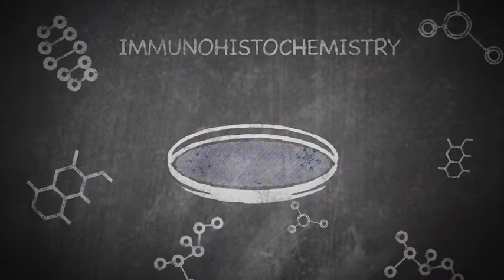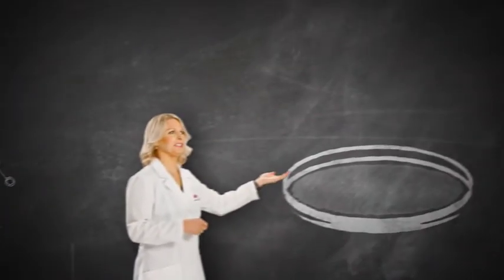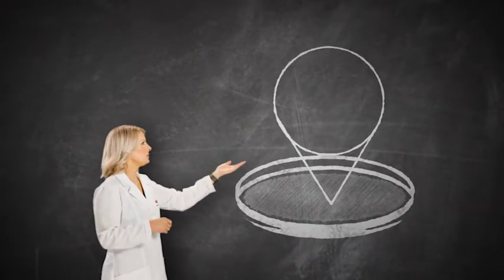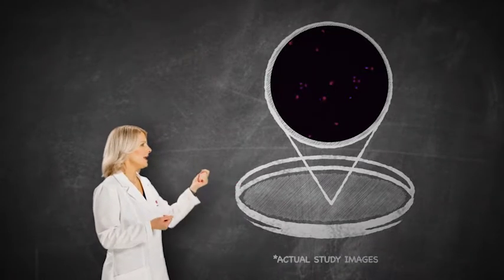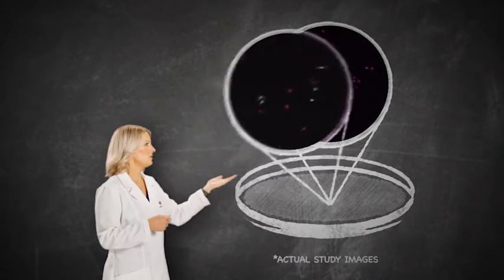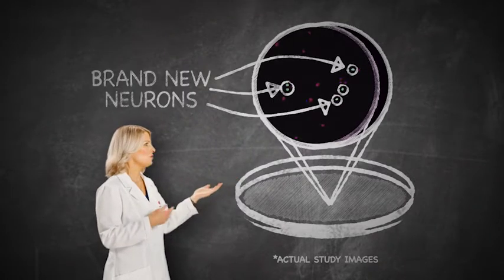So let's take a look at this. Here we have the petri dish itself. You can see these purple circles are neurons. But which one of those are new? Here we added another label and you can see with the green, these are brand new created neurons.